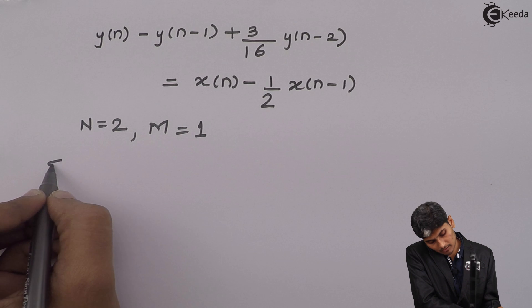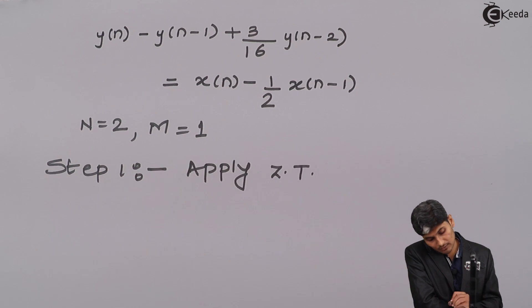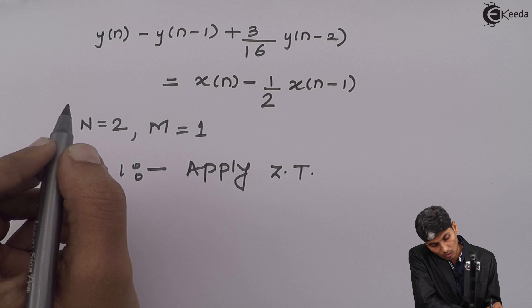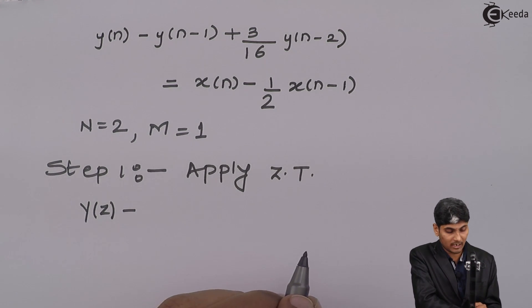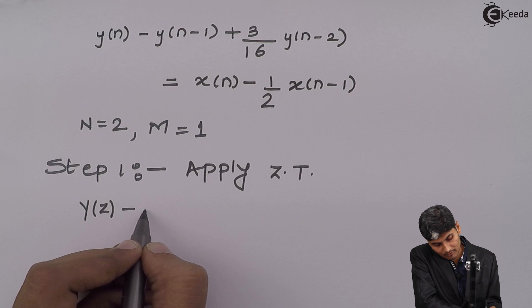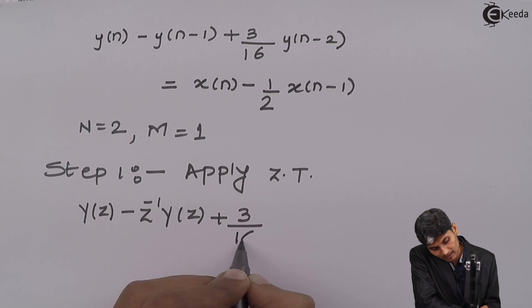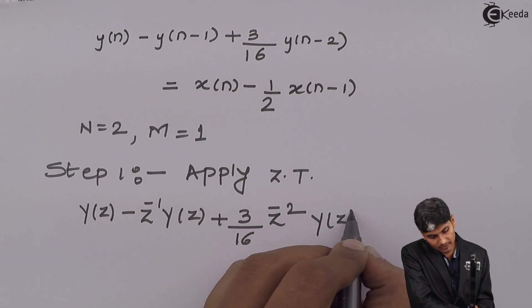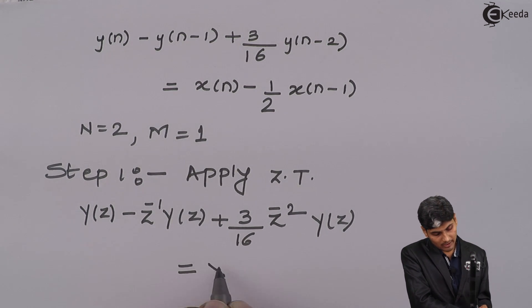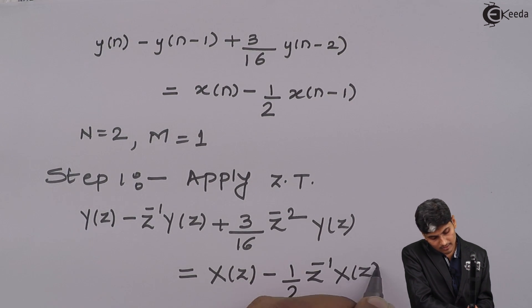To solve this problem we apply Step 1: apply Z-transform. When we apply Z-transform, all y(n)'s will convert to Y(z) because of the linearity property; plus and minus will be kept as is. For n-1 we multiply by z⁻¹, giving Y(z), and for n-2 we multiply by z⁻², giving (3/16)Y(z). On the right side, x(n) goes to X(z) minus (1/2)z⁻¹X(z). This completes Step 1.